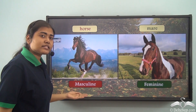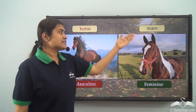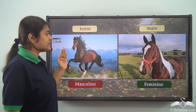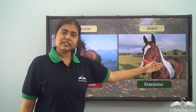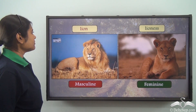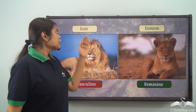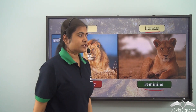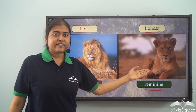The horse belongs to the masculine gender because 'horse' refers to the male animal, whereas the mare belongs to the feminine gender because it refers to the female. You can see they are distinctly different in their looks — one has the mane while the other does not. The lion is the masculine gender because 'lion' refers to the male animal, whereas 'lioness' is the female and refers to the feminine gender. By their looks also they are very different.